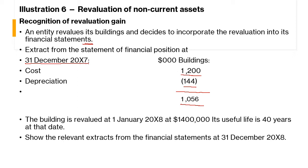The building is revalued at 1st January 2018 at 1,400,000, so there is an increase in the value of the asset. The carrying value at the date of revaluation was 1,056,000, and the new revalued amount is 1,400,000. Therefore, the excess — the revaluation gain — is 344,000.